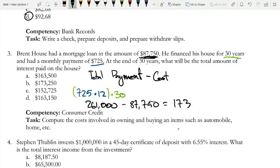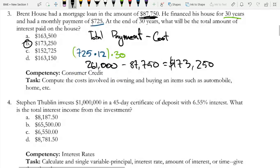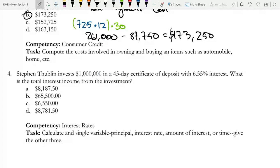And I'm left with $173,250, and that is option B. Now on to question four. Stephen Dublin invests $1 million in a 45-day certificate of deposit with a 6.55% interest. What is the total interest income from the investment? So this is the yearly interest, this is the annual interest. And it is important to note that a banker's year is 360 days, so not 365 days. Okay, that's an easy mistake to make.